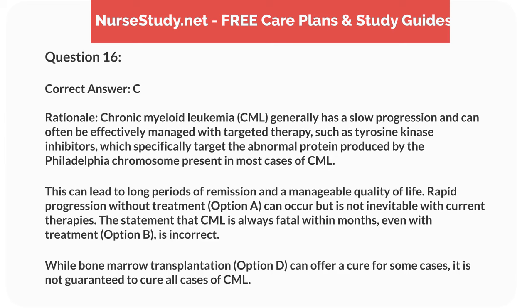Correct answer: C. Rationale: chronic myeloid leukemia, CML, generally has a slow progression and can often be effectively managed with targeted therapy, such as tyrosine kinase inhibitors, which specifically target the abnormal protein produced by the Philadelphia chromosome present in most cases of CML. This can lead to long periods of remission and a manageable quality of life. Rapid progression without treatment, option A, can occur but is not inevitable with current therapies. The statement that CML is always fatal within months, even with treatment, option B, is incorrect. While bone marrow transplantation, option D, can offer a cure for some cases, it is not guaranteed to cure all cases of CML.